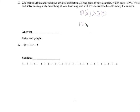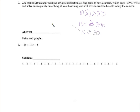So 10 times any number of hours needs to be greater than or equal to $390. If we divide both sides by 10, we get x is greater than or equal to 39, and that's the answer.